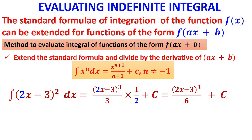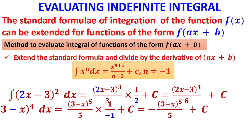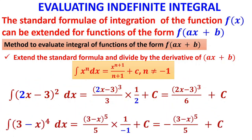Extend the formula and divide by the derivative of (ax + b), or keep in mind to divide by the coefficient of x. But be very careful if the coefficient of x is a negative number. For example, for (3 − x)⁴: x⁴ integrates to x⁵/5, so (3 − x)⁵/5 must be divided by −1, because the coefficient of x is −1.